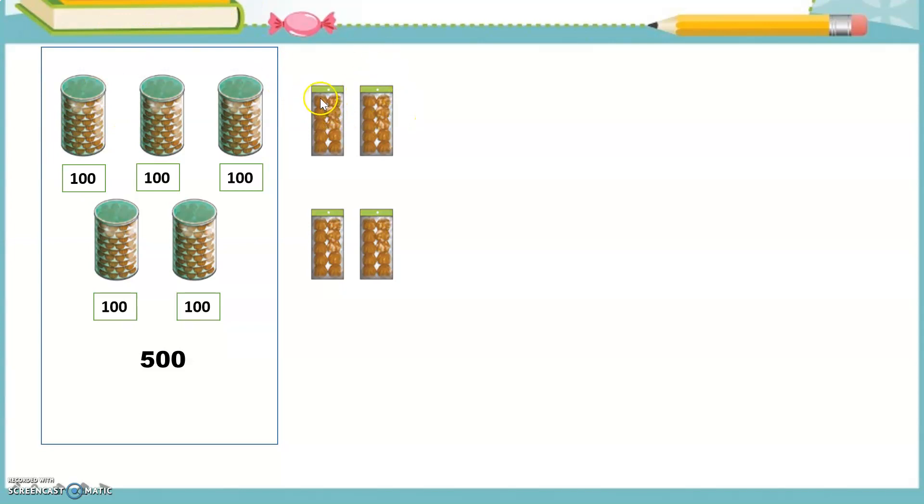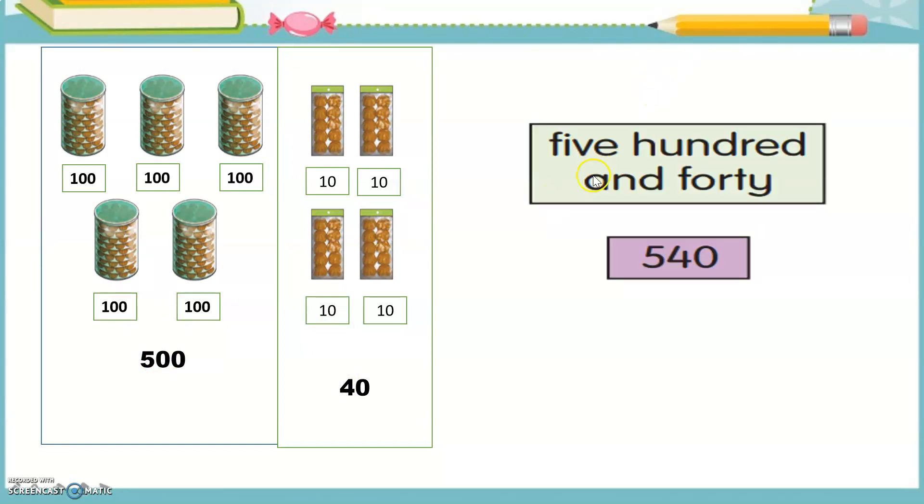The small packets here, each packet contains 1, 2, 3, 4, 5, 6, 7, 8, 9, and 10. So 10, 20, 30, and 40. So there are 500 and 40 ways here. So the value is 500 and 40.